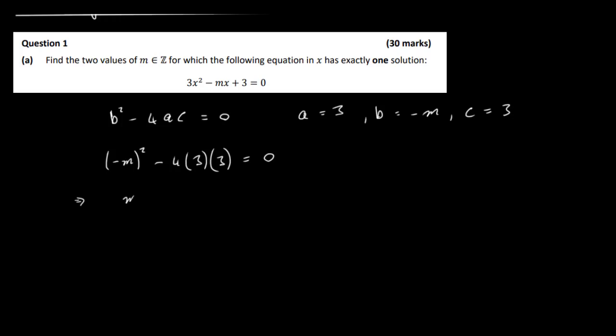We have m squared, minus 4 times 3 times 3 is 36, equal to 0. So that gives us m squared equal to 36, and finally m is going to be equal to plus and minus 6. So there are two values for m. You could check that if you wanted to — it's not absolutely necessary, but let's just do that.